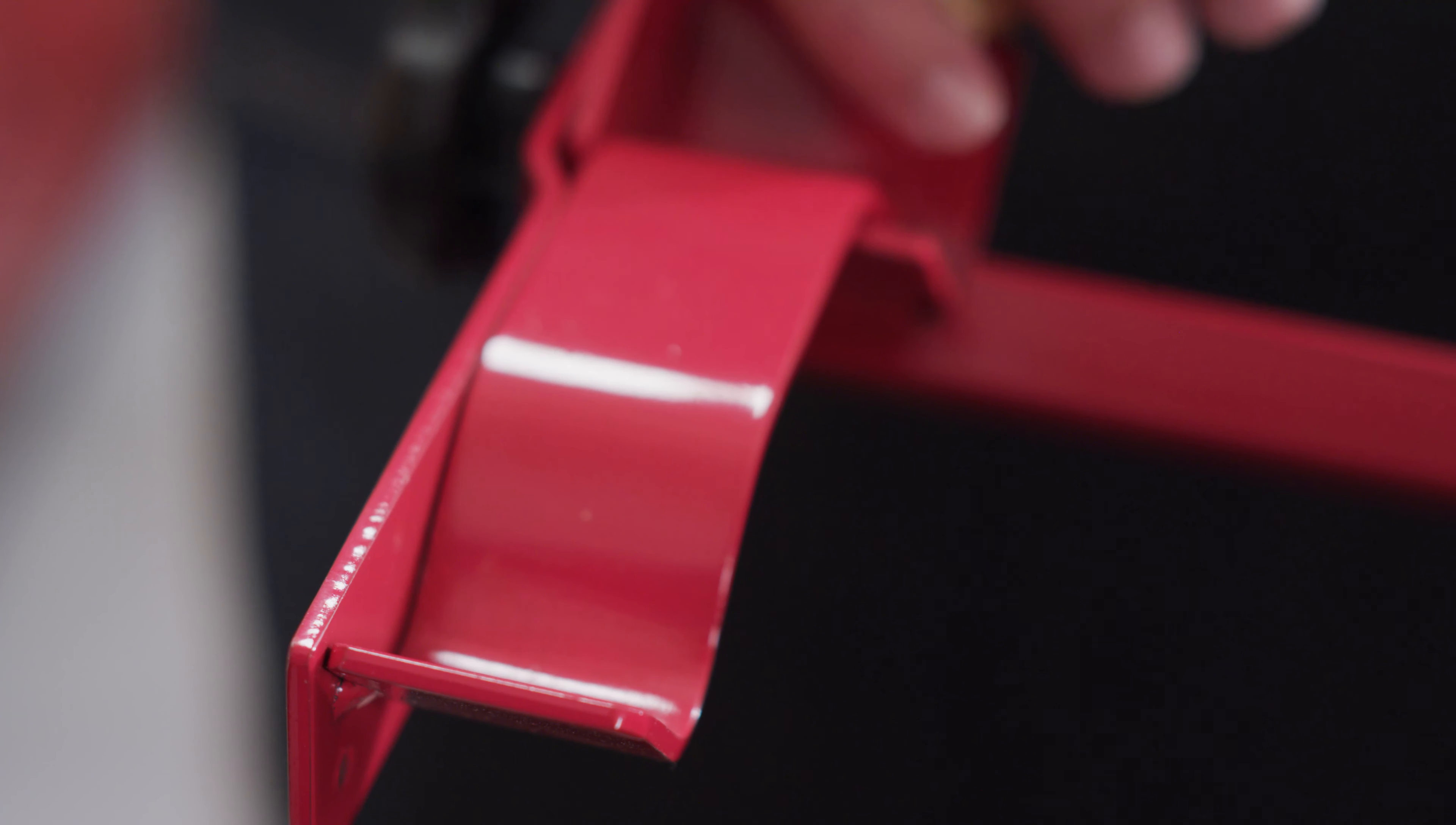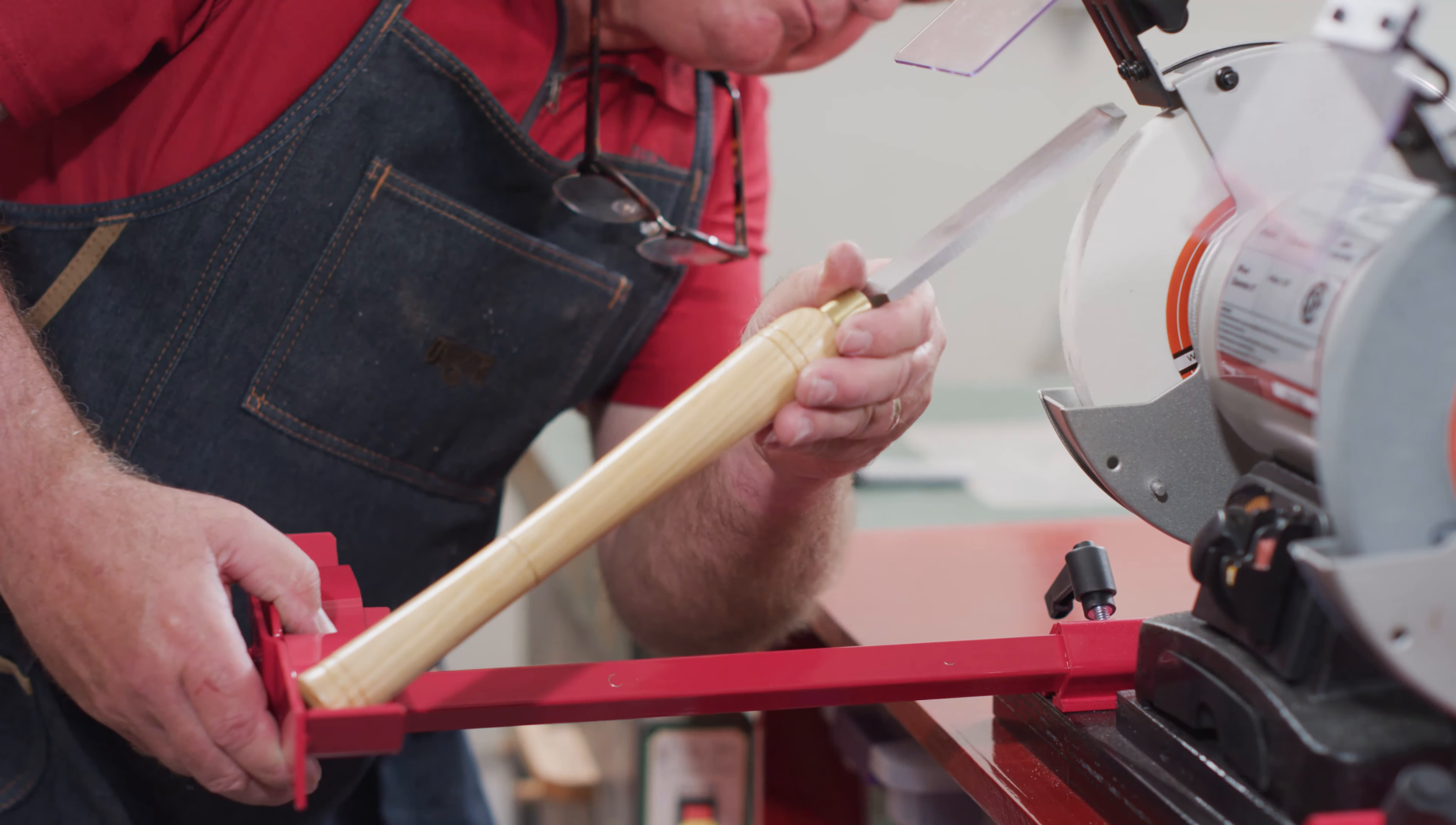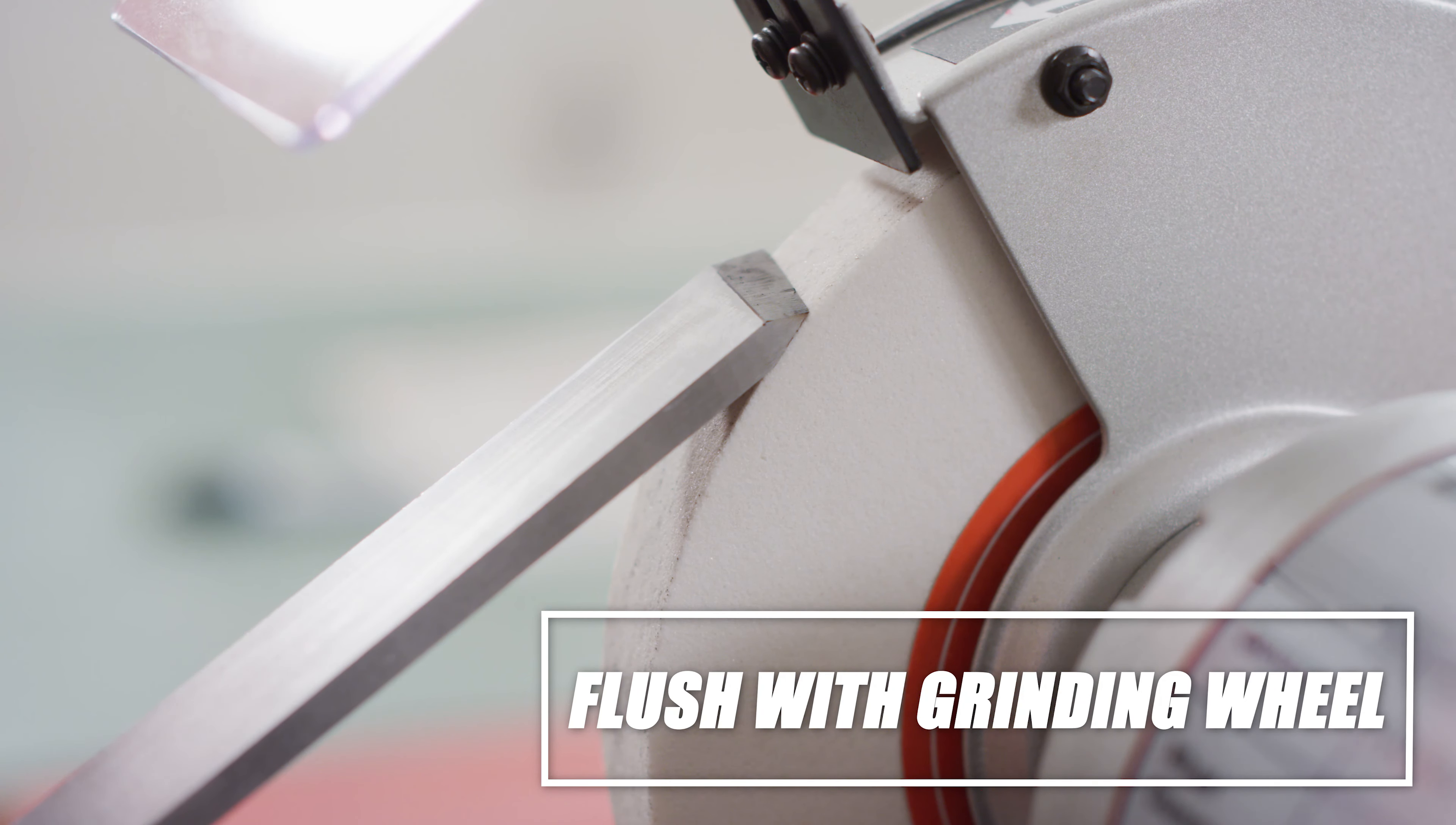Position the handle of the skew in either the right hand or left hand V pocket of the skew attachment jig. Move the extension arm forward or backward in the base until the beveled cutting edge of the skew rests flat on the grinding wheel.